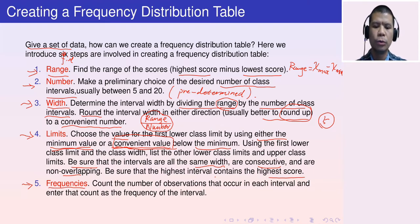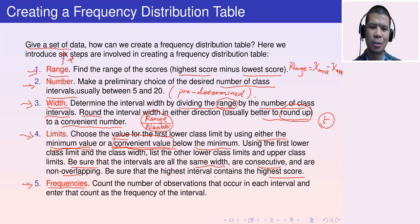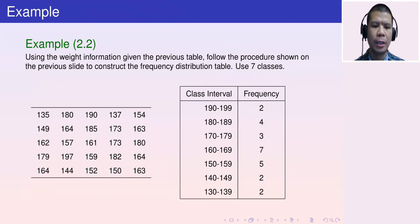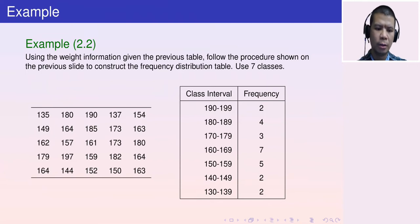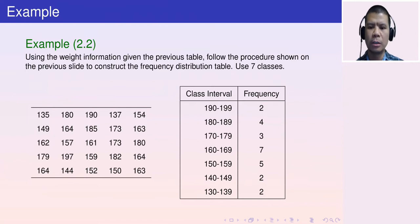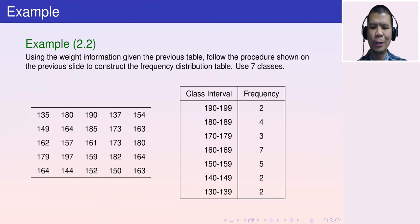Let's do an example to see how these five steps construct a frequency distribution table. We have a data set about the weights of 25 male students in a statistics class, and we want to construct the frequency distribution table shown on the right.